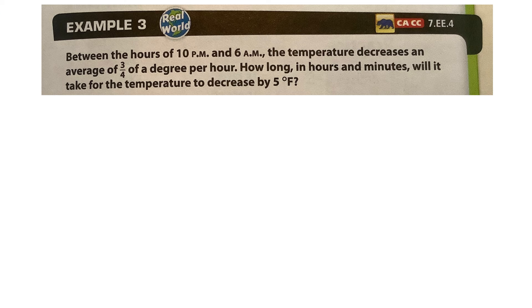Now we have example three, and it says here that between the hours of 10 p.m. and 6 a.m., the temperature decreases at an average of 3/4 of a degree per hour. How long in hours and minutes will it take for the temperature to decrease by five degrees? Okay, so we have some time here, and then it decreases at an average rate of 3/4 of a degree per hour. So it decreases, so that means it's going to be going down, negative 3/4 of a degree per hour.